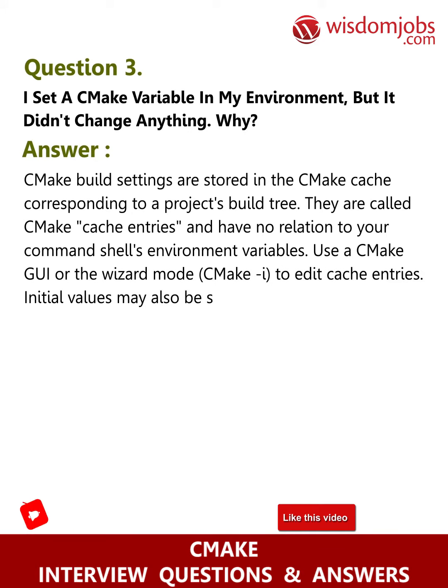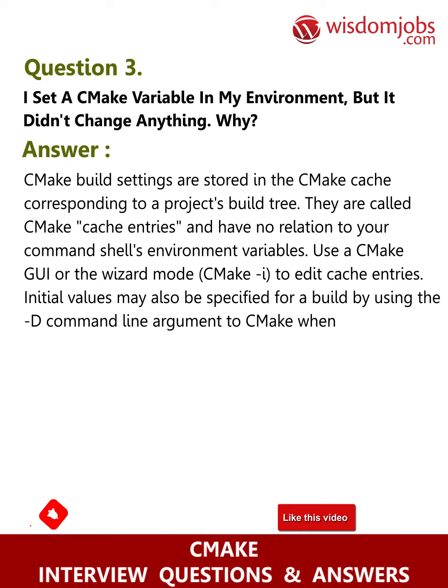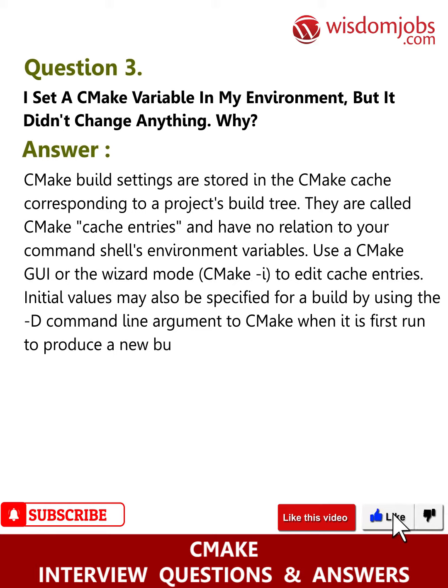Initial values may also be specified for a build by using the -D command line argument to CMake when it is first run to produce a new build tree.